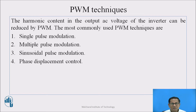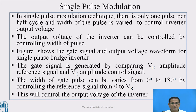PWM techniques: the harmonic content in the output AC voltage of the inverter can be reduced by using the pulse width modulation technique. The most commonly used PWM techniques are single pulse modulation, multiple pulse modulation, sinusoidal pulse modulation, and phase displacement control. In single pulse modulation, there is only one pulse per half cycle and the width of the pulse is varied to control the inverter output voltage.